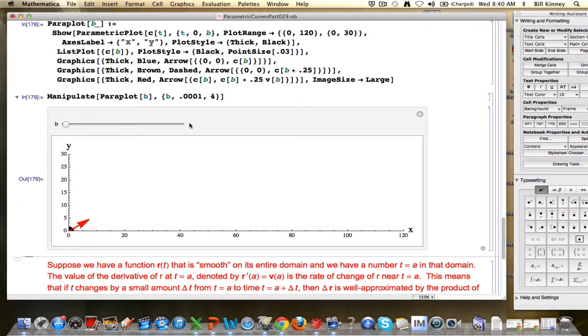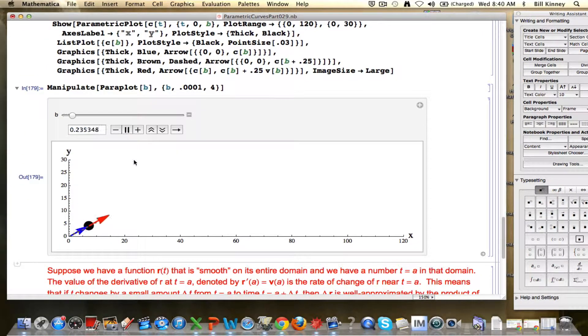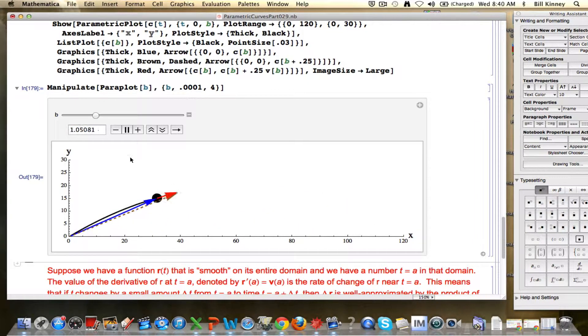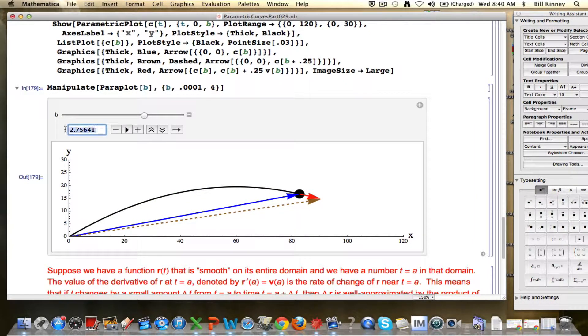Here is the ball as it moves, that's the black dot, the black curve is the parabola, that's the trajectory of the ball. The blue arrow is the position vector of the ball at any moment in time, in this case about 2.756 seconds gone by. The dash brown arrow is also a position vector for the motion, but 0.25 seconds into the future, because I put a 0.25 right here.